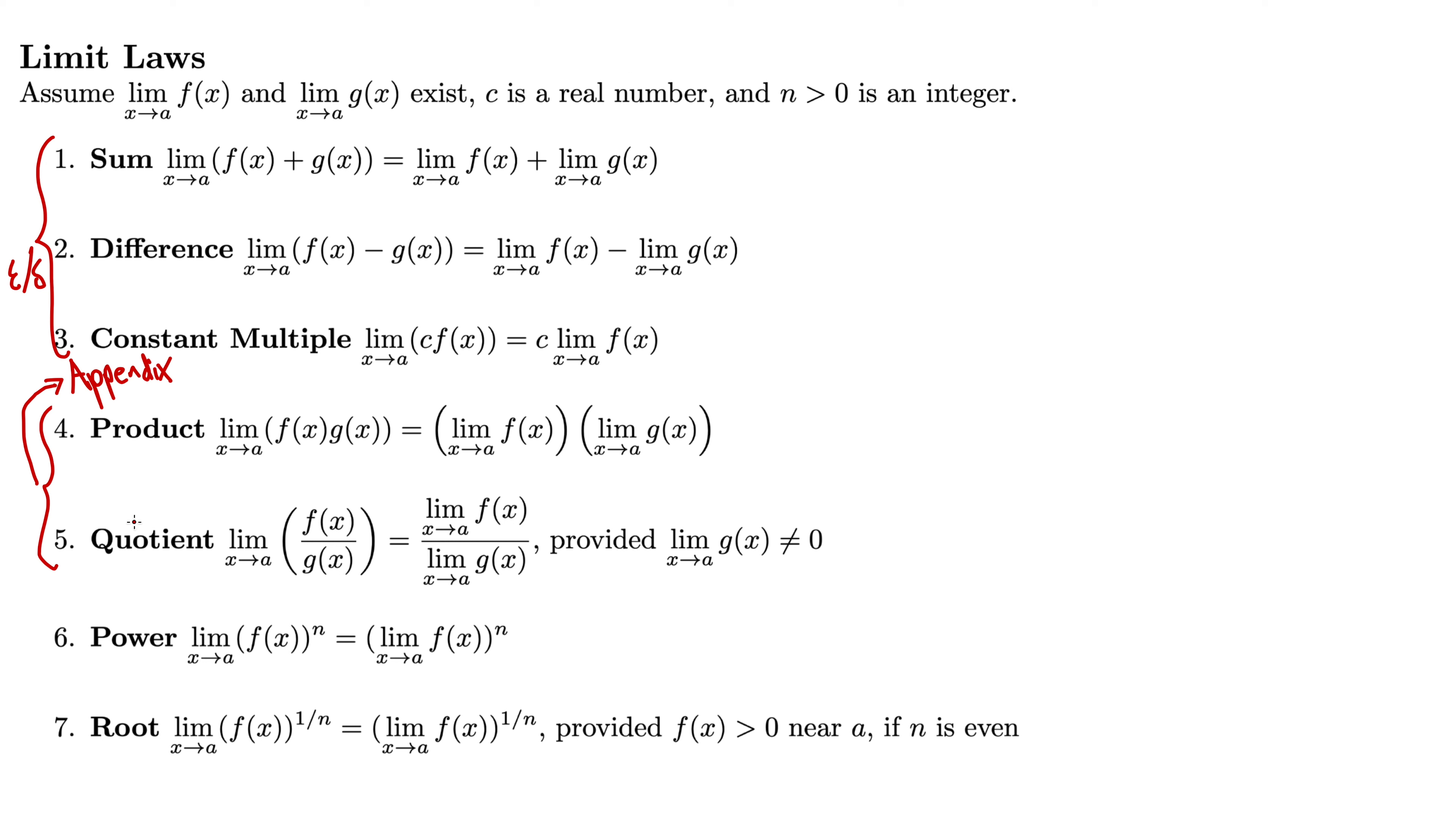Well, for proving number 6, if we accept number 4, the product rule, the product limit law, then the power limit law follows from that very nicely because f(x) to the power of n is just f(x) times f(x) times f(x). So if number 4 is true, 6 follows from that. So that's okay. There's a proof. Done.